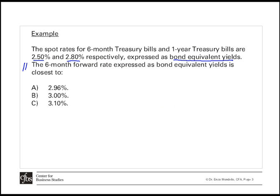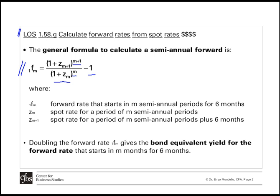The correct answer is C: 3.1%. This discussion illustrates that arbitrage logic can be used to derive forward rates from spot rates, and there is no need to memorize the complicated formula in the candidate readings as long as you understand the underlying calculation.